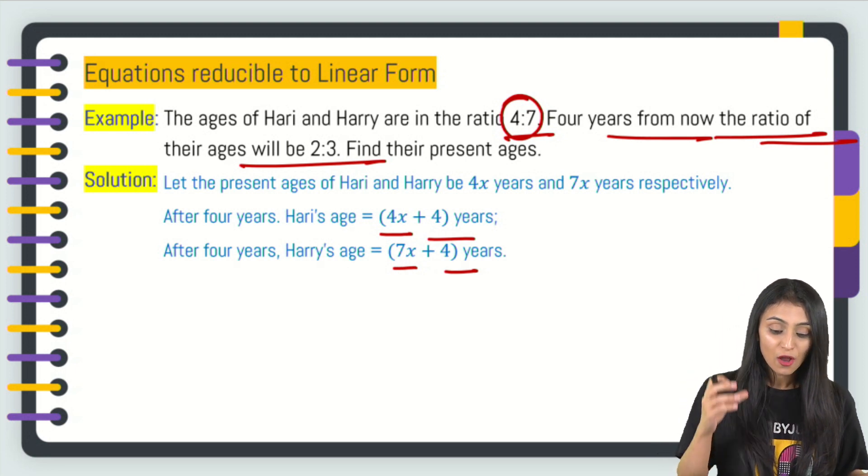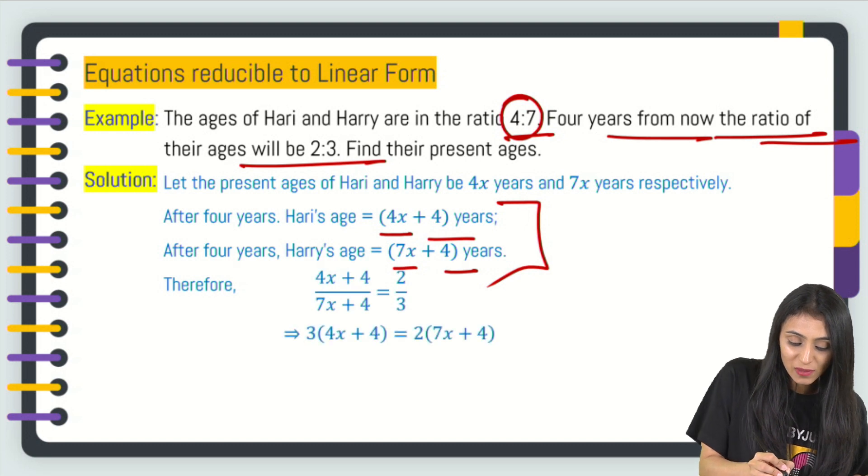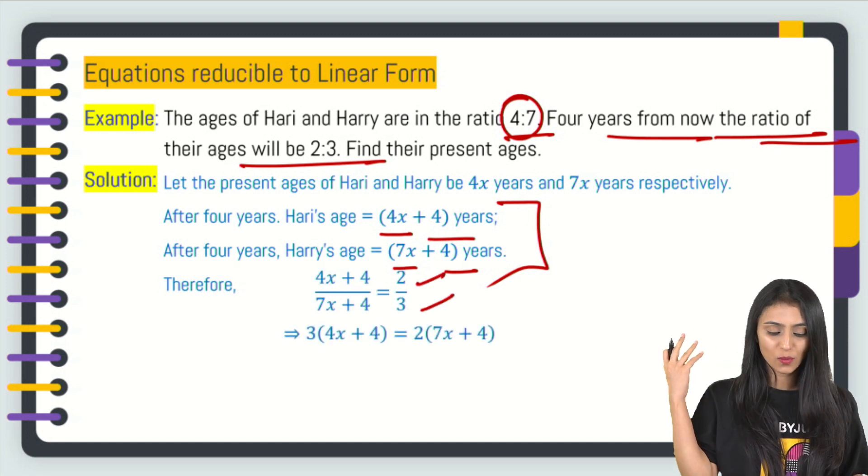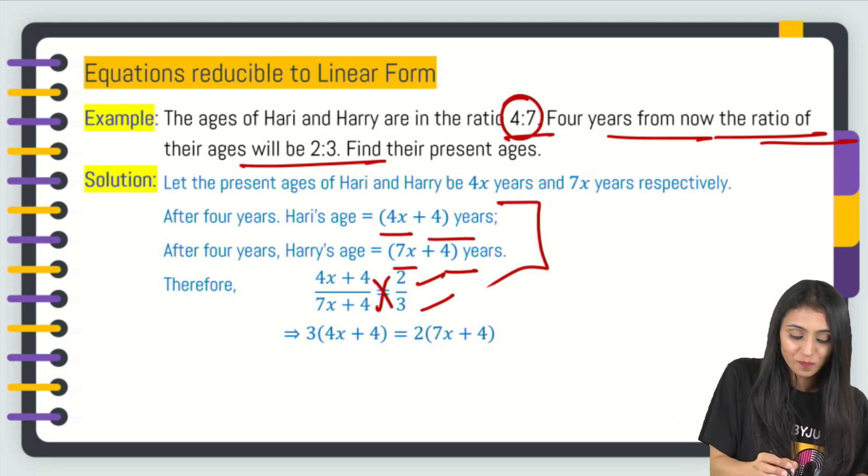Four years from now, we have the ages—the ratio of their ages. That means (4x + 4)/(7x + 4) becomes 2/3. This is what the question says. Now let's cross multiply this. We are converting this to the linear form. So 3 times (4x + 4) equals 2 times (7x + 4).